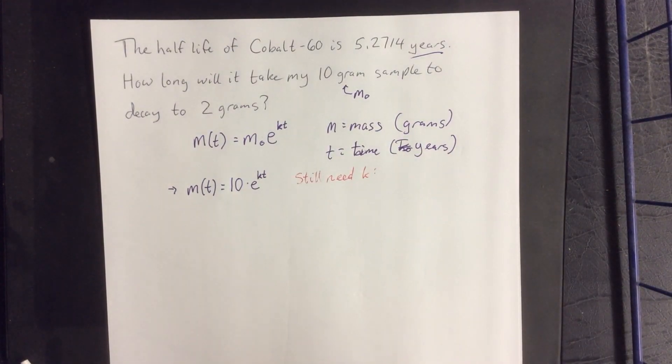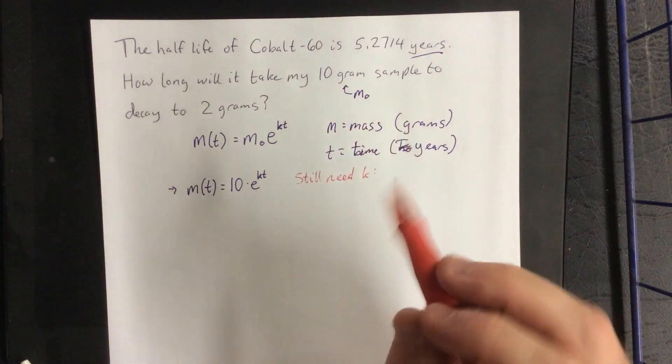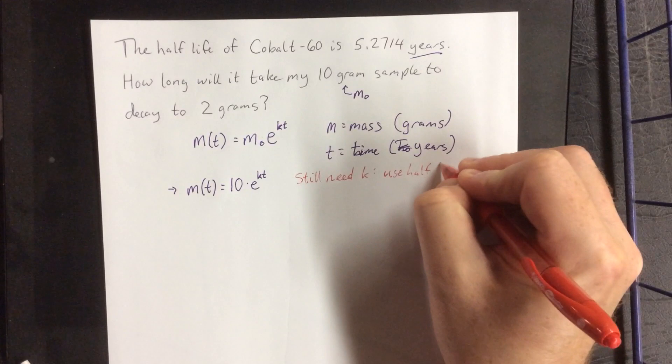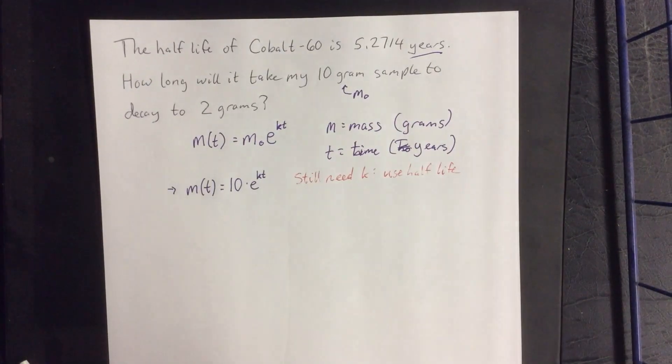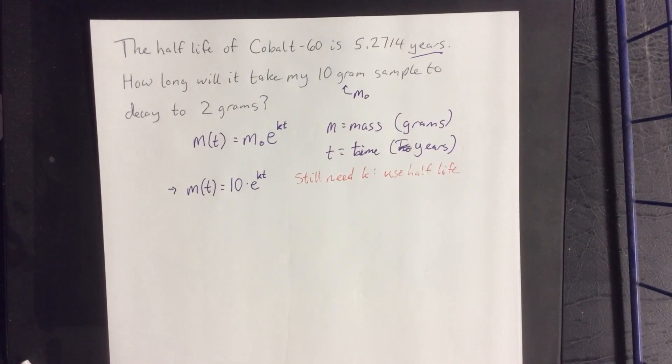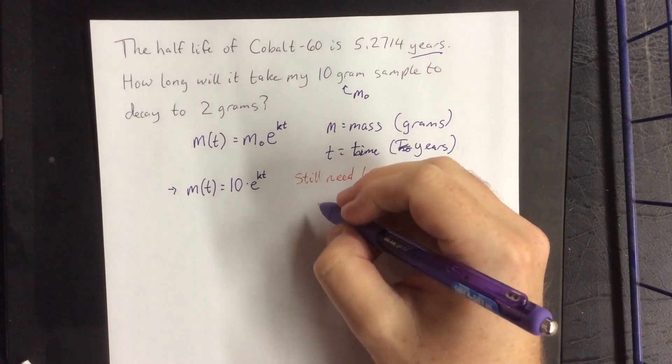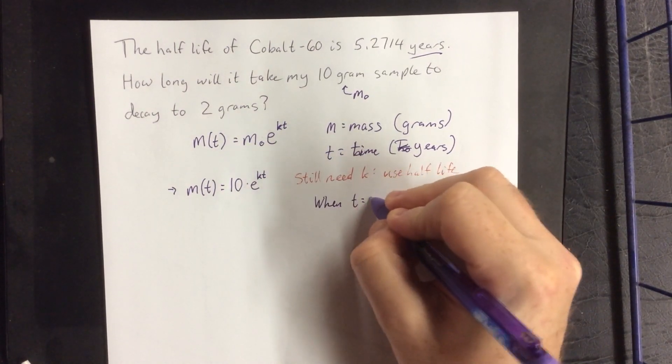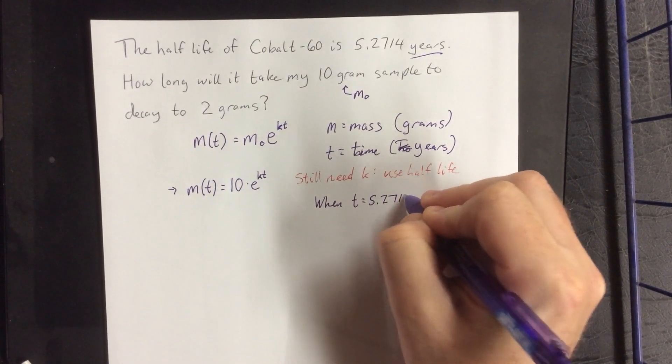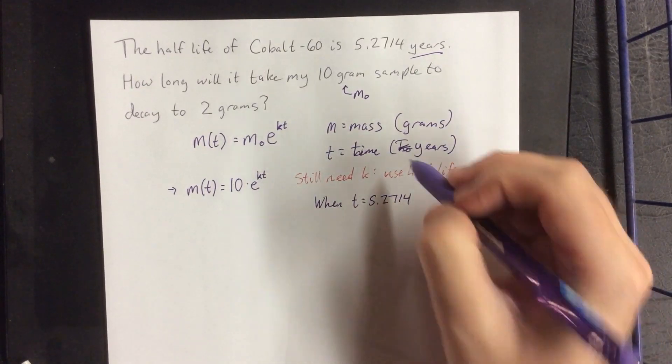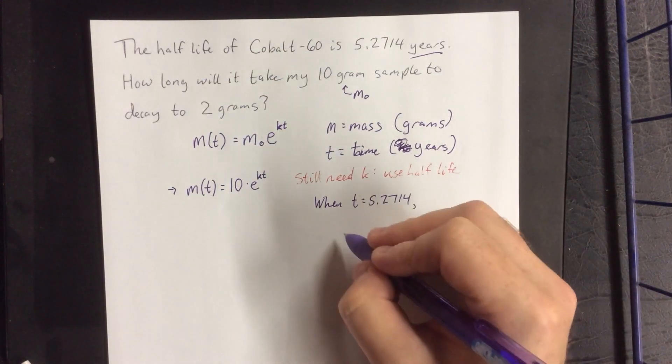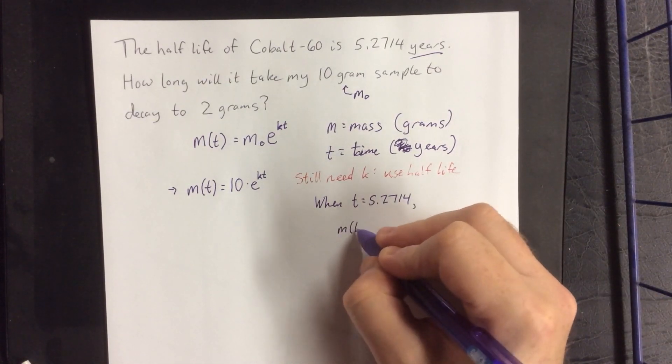The good news is that we can figure out what this value is going to be equal to based off of the fact that we have the half-life. The way that we're going to use the half-life is that the half-life lets us know that when t is equal to 5.2714 years, because hours would be ridiculous,